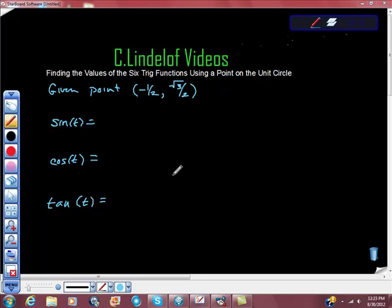Okay, finding the values of the six trig functions using a point on the unit circle. So we're given this point, and it's the point negative one-half, comma, square root three over two.